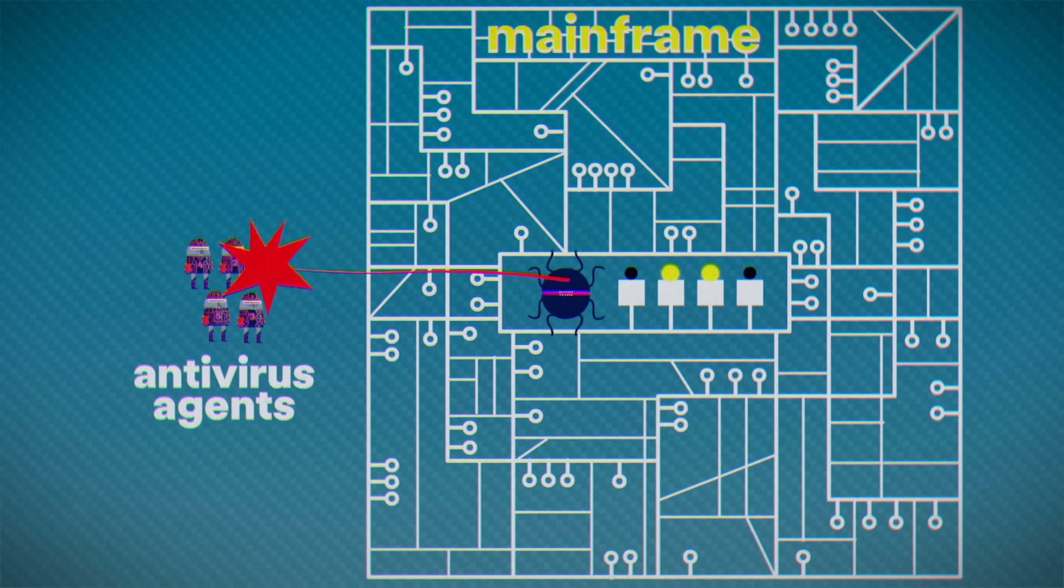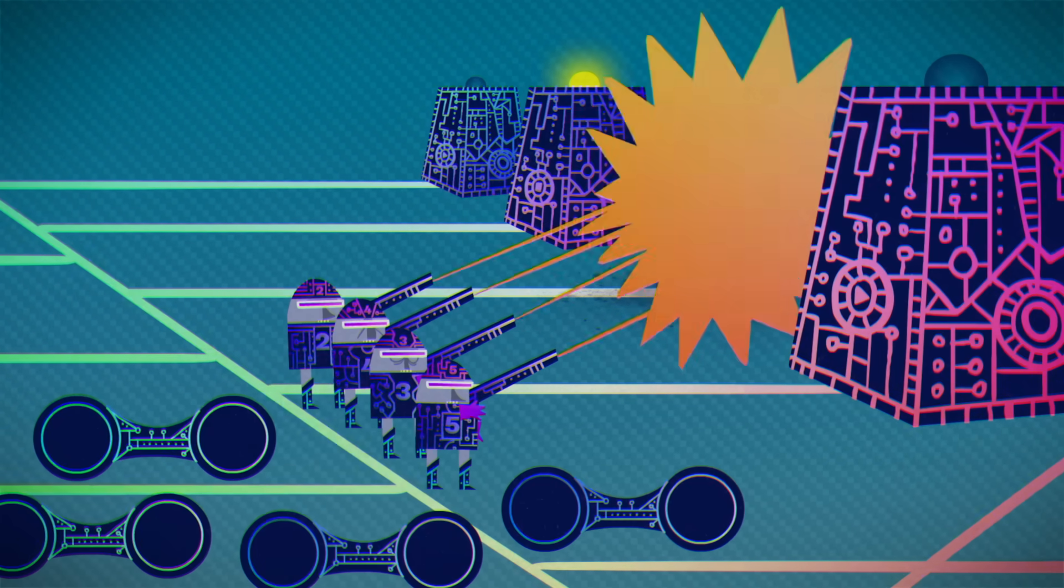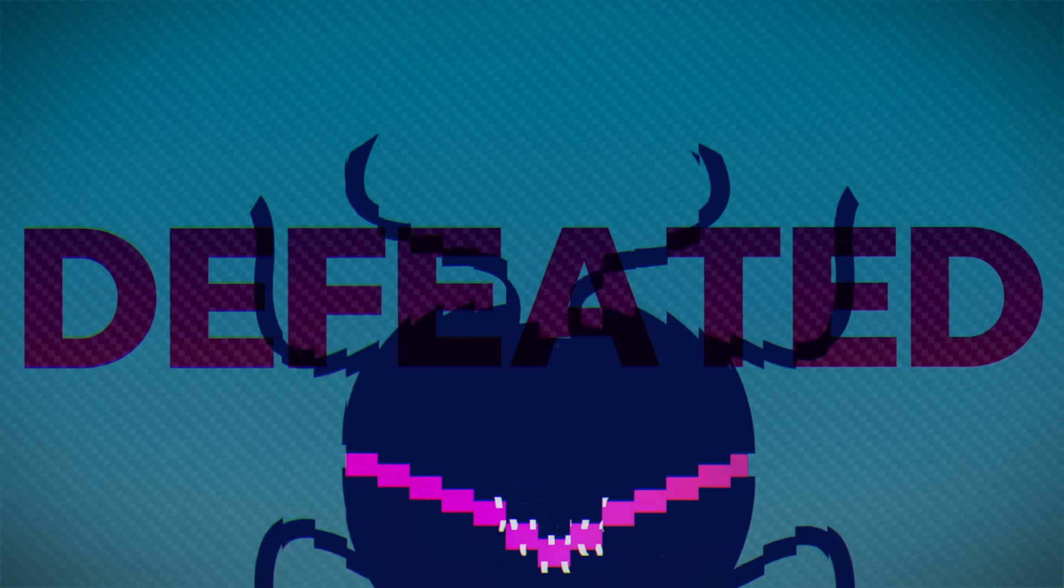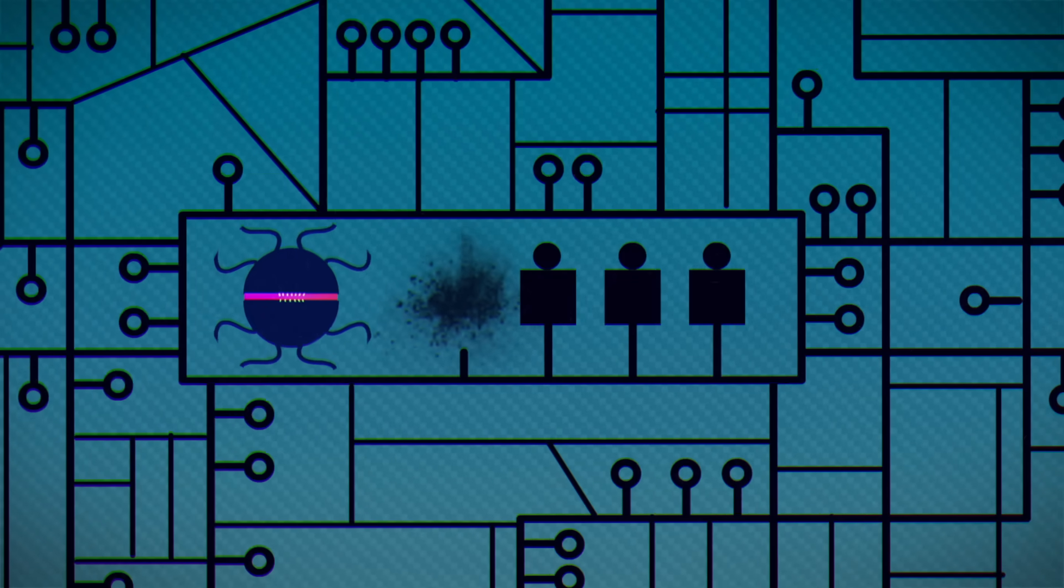Then it selects one member of the antivirus squad—this'll be you—and brings them into the mainframe. It tells them which disk it corrupted, allows the agent to switch a single disk on or off, then immediately derezzes the agent. Your squad can make an all-out attack to break into the mainframe and destroy one disk before they're wiped out. If they destroy the corrupted one, the malware will be defeated. Any others, and the virus will erase the entire system.